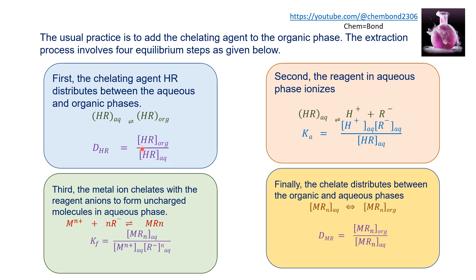In the second step, the reagent in the aqueous phase ionizes to produce H⁺ and R⁻. The ionization constant Ka is equal to the concentration of H⁺ multiplied by R⁻ in the aqueous phase divided by the concentration of unionized reagent HR in the aqueous phase.